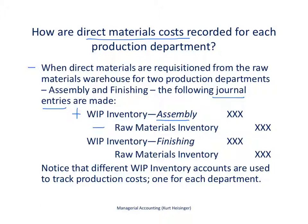We do the same thing for the finishing department. If the finishing department is pulling direct materials out of the raw materials warehouse, we make an entry that increases work in process in the finishing department and decreases raw materials inventory. So we have different work in process inventory accounts used to track production costs — one for each department.